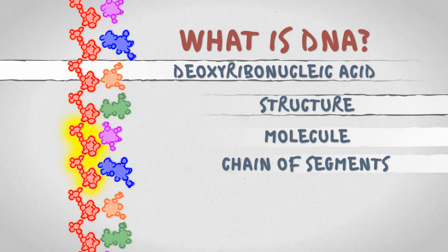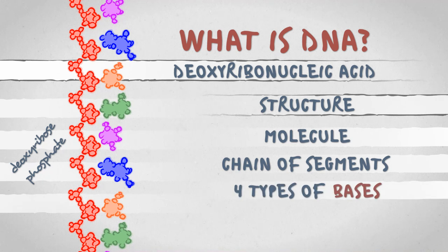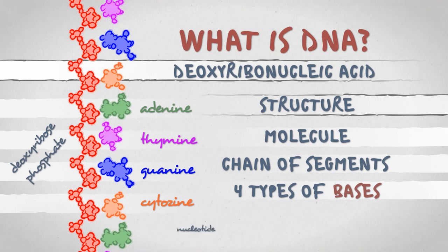It's a long chain of deoxyribose phosphate molecules forming a backbone with each segment connected to one of four different bases: adenine, thymine, guanine and cytosine. The base and the backbone segment together are referred to as a nucleotide.